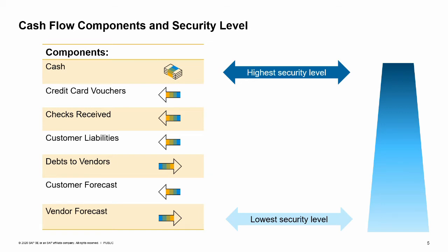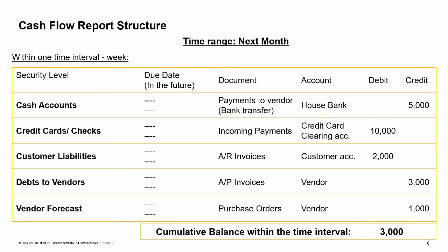The cash flow runs according to open transactions, not reconciled, with the option to display fully reconciled postings, and the transaction due date. The cash flow is displayed according to time intervals — days, weeks, months, etc. — and security levels. The report lists all time intervals within the date range of the report. Each interval lists the expected transactions in the future according to their security level. In the image, you can see an illustration of one time interval within the cash flow report.